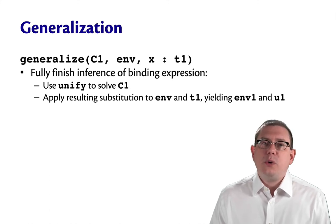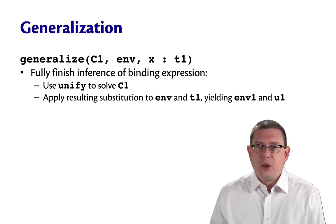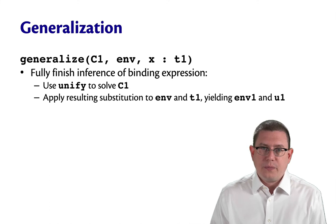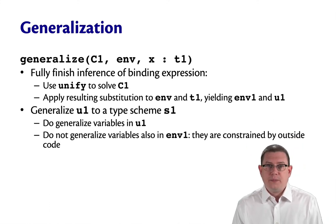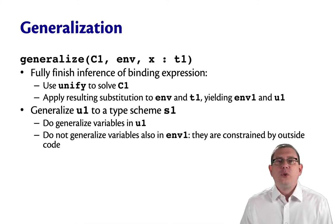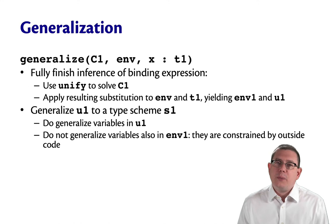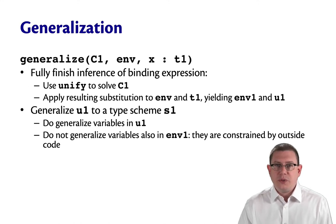So that gets us a new environment, let's call it env1, and a new type, let's call it U1. Now, we generalize U1. So we had fully finished inference for it. We look at it and say, are there any type variables here we could generalize and turn this into a type scheme?